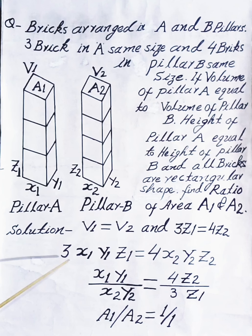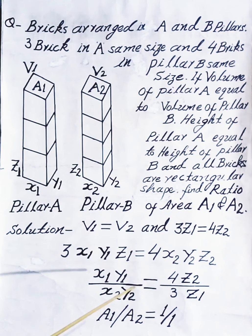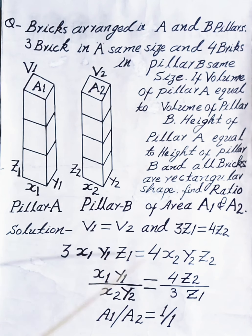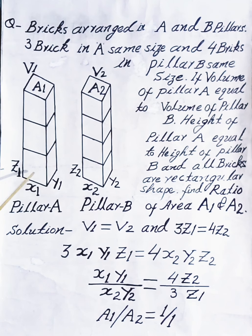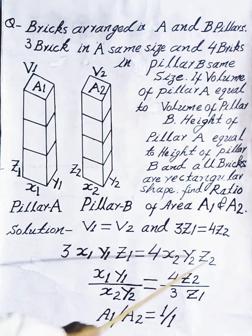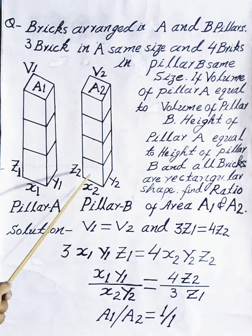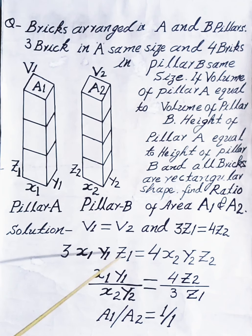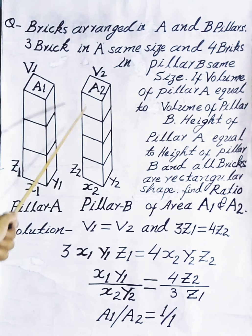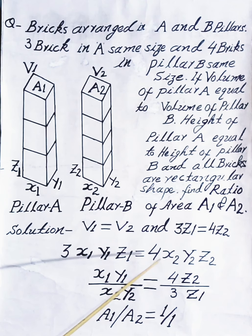Volume V1 equals 3·x1·y1·z1, and volume V2 equals 4·x2·y2·z2, where x1, y1, z1 are the dimensions of one brick in pillar A, and x2, y2, z2 are the dimensions of one brick in pillar B. So volume of three bricks, 3·x1·y1·z1, equals volume of four bricks, 4·x2·y2·z2.